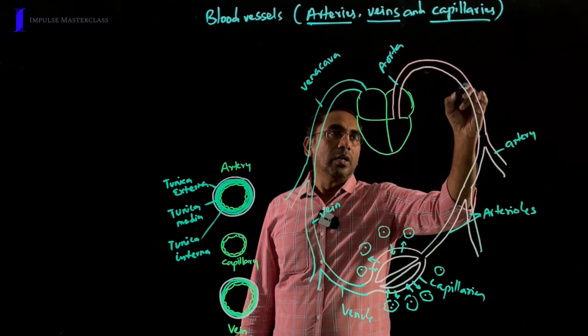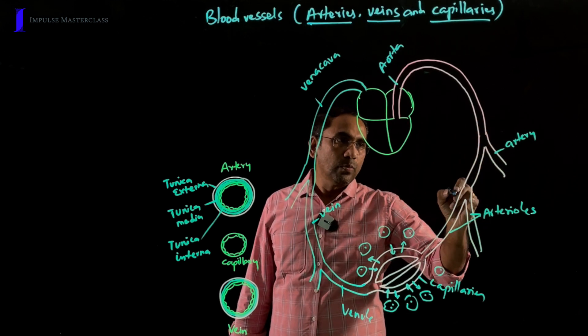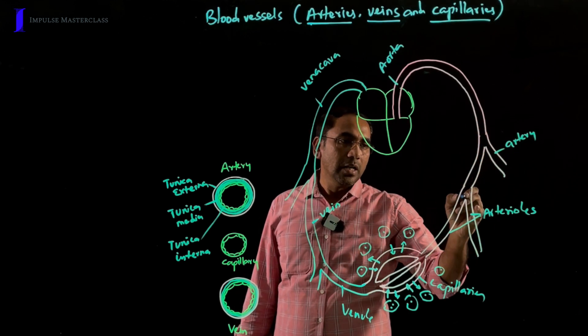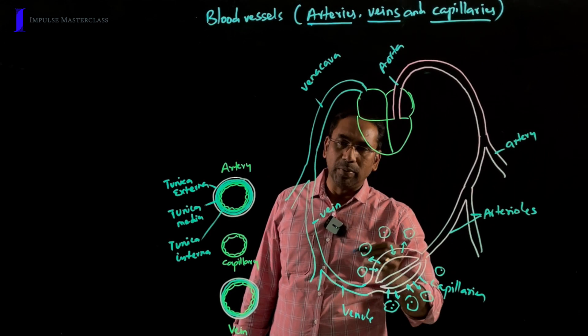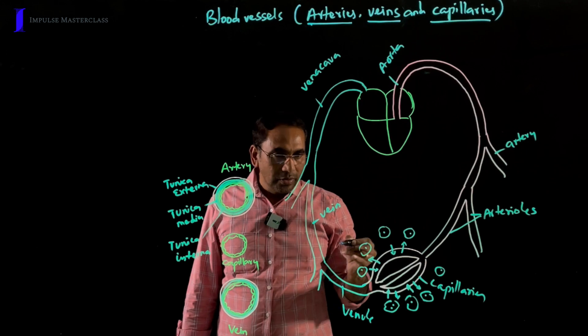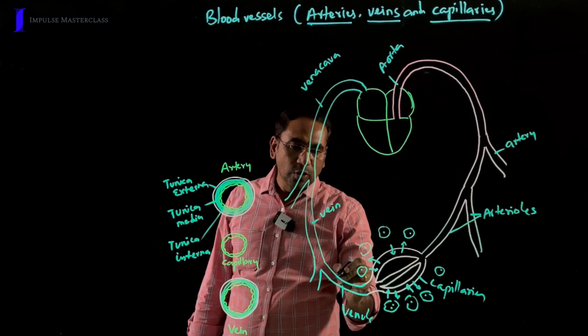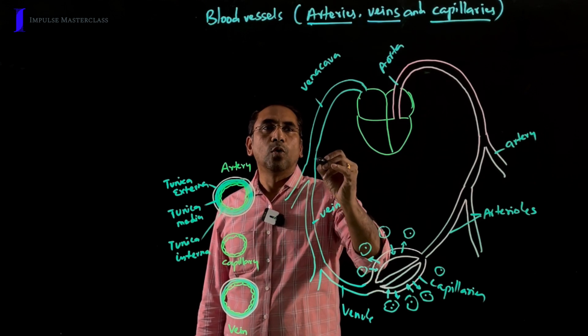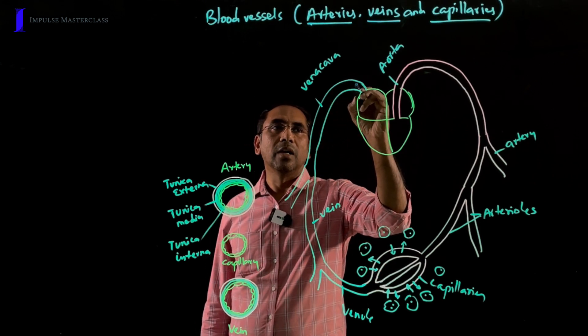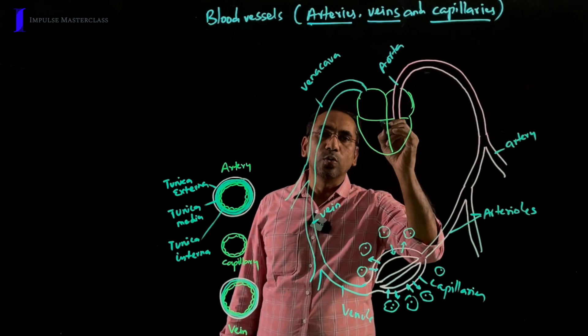And this aorta on its way breaks up into small branches called arteries, arterioles, and finally breaks up into small branches called capillaries. And these capillaries again join together to form small branches called venules. Venules and veins together open into the largest veins called vena cava, which finally opens into the heart.